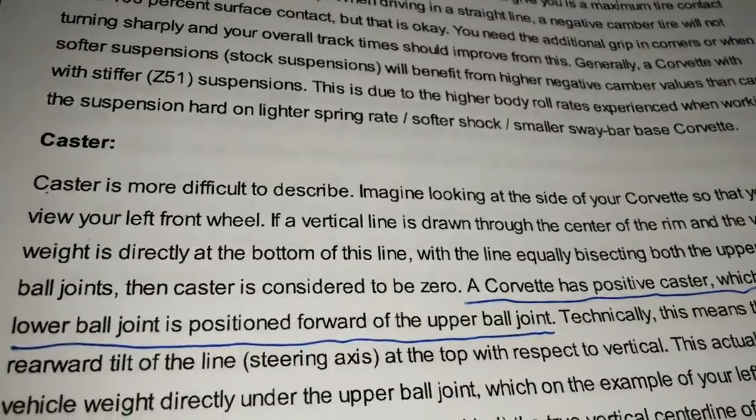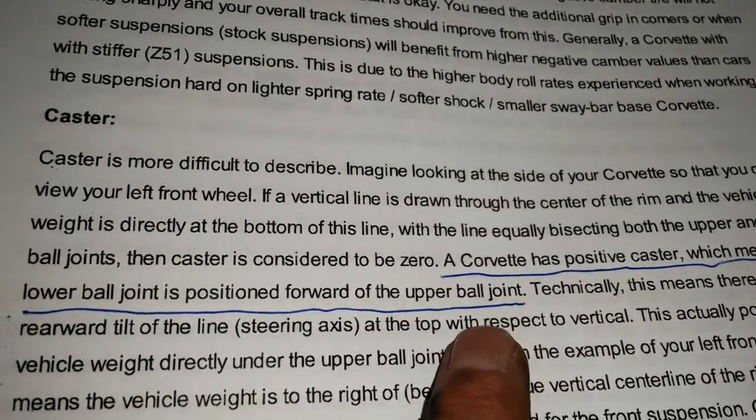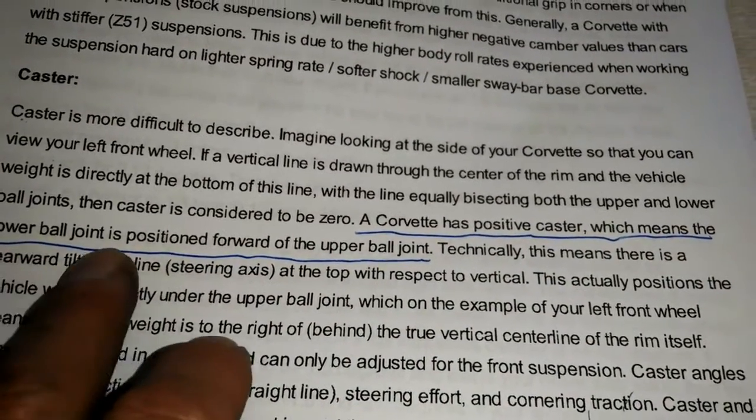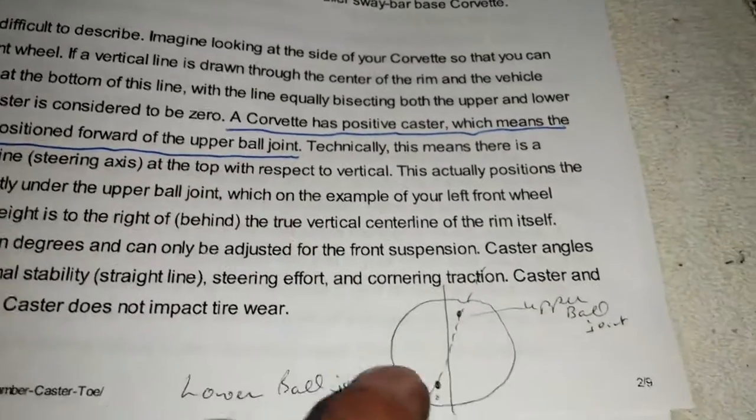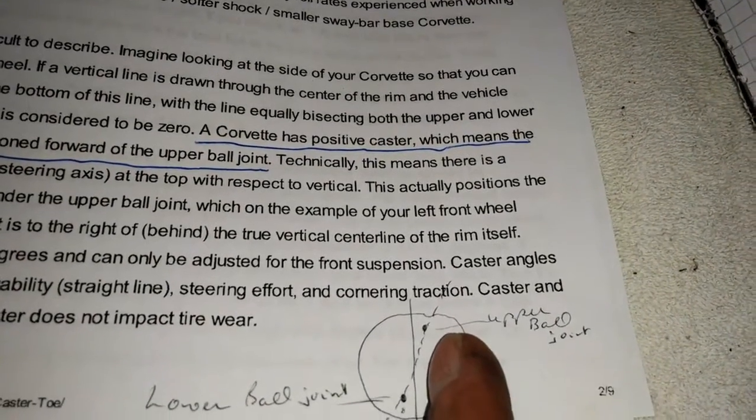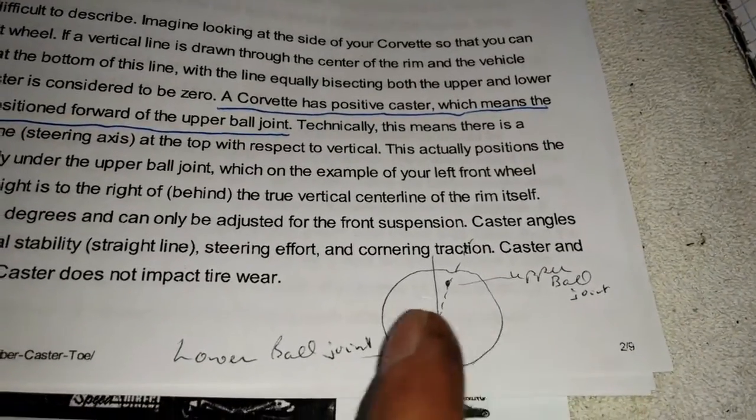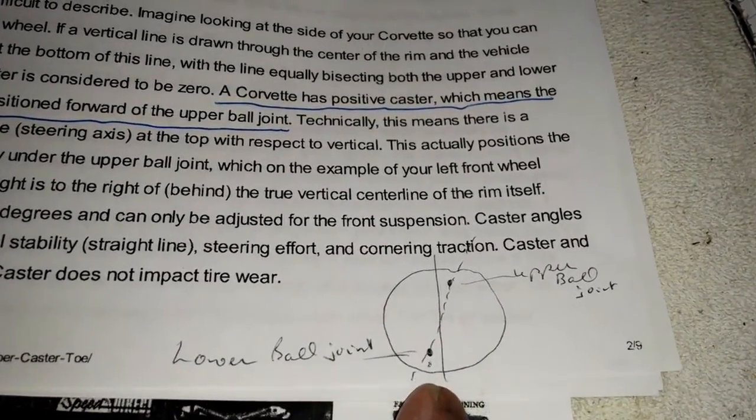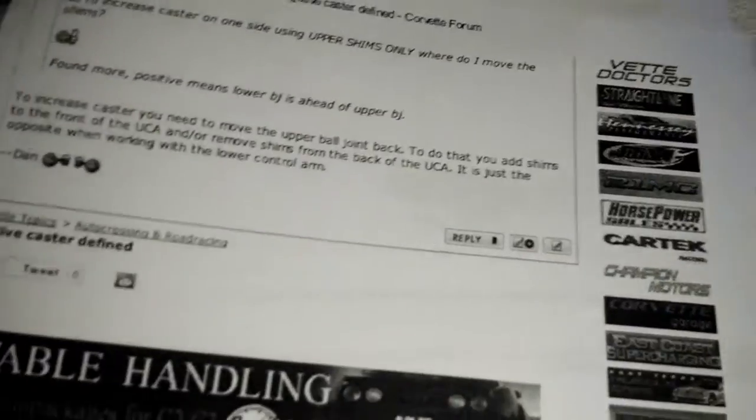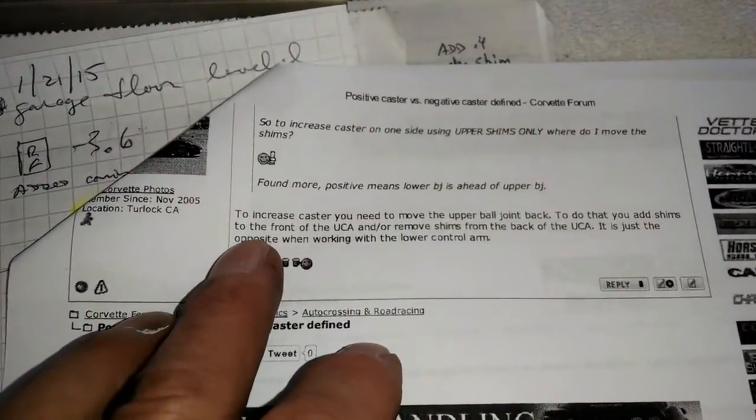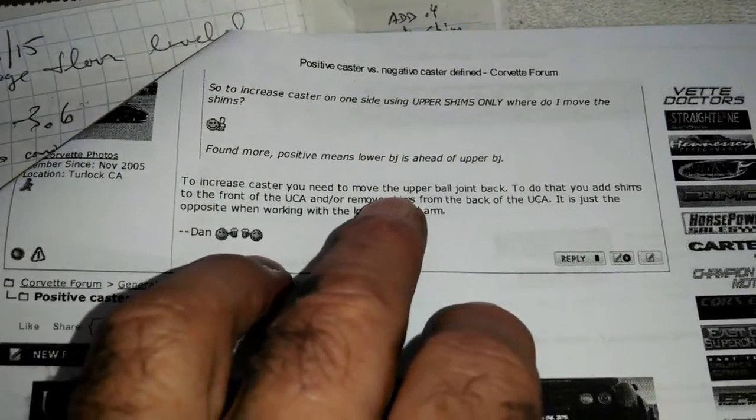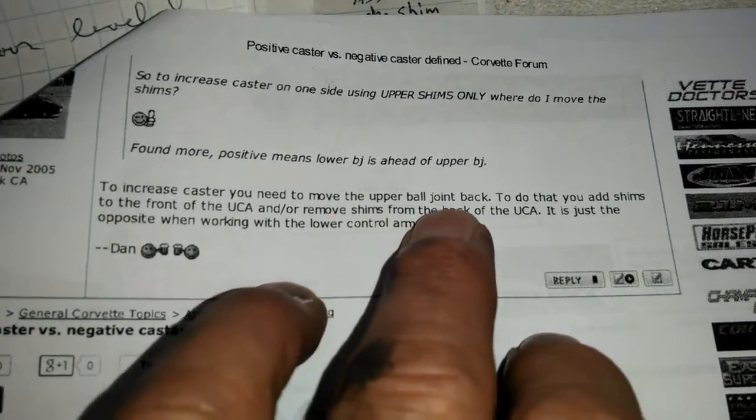I've got today 6.943 positive caster on the left front and 7.074 positive caster on the right front. And I want more on this side, but it's only a little bit more. I don't want to get more on both sides because I'm really happy with about 7.0 and the way the car handles with 7.0.